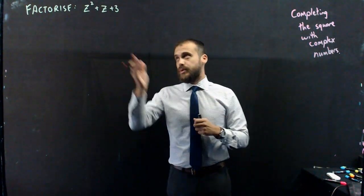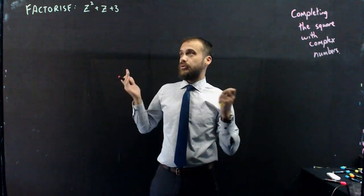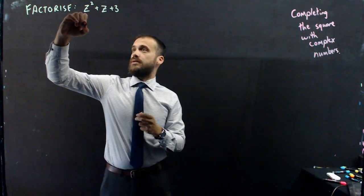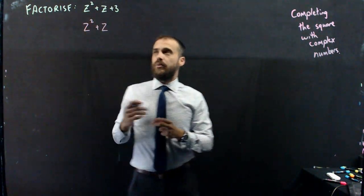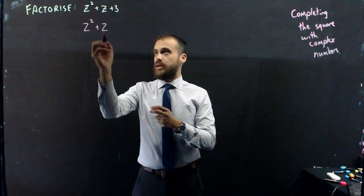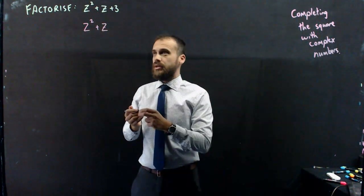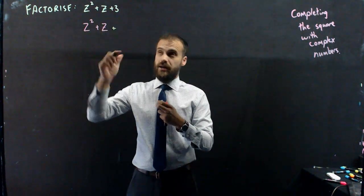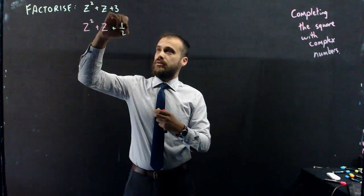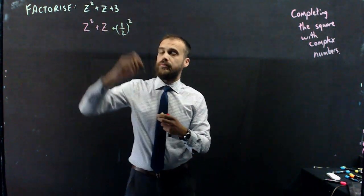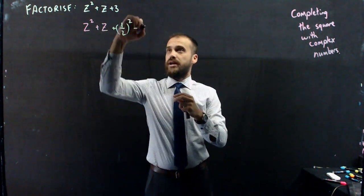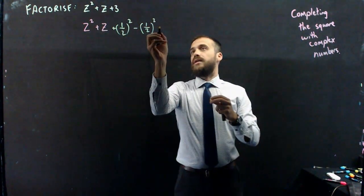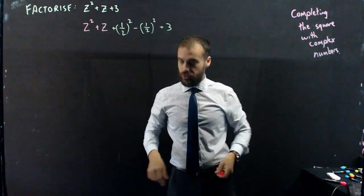So I'm going to complete the square here. I'm going to factorize. You can see there's no equal sign here at all. It's just an expression. All right, so we're going to factorize it. z squared plus z. We're going to halve and square the b value. So half of 1 is a half and square it, which is going to be a quarter. And then I'm going to subtract that same thing and add 3 to it.